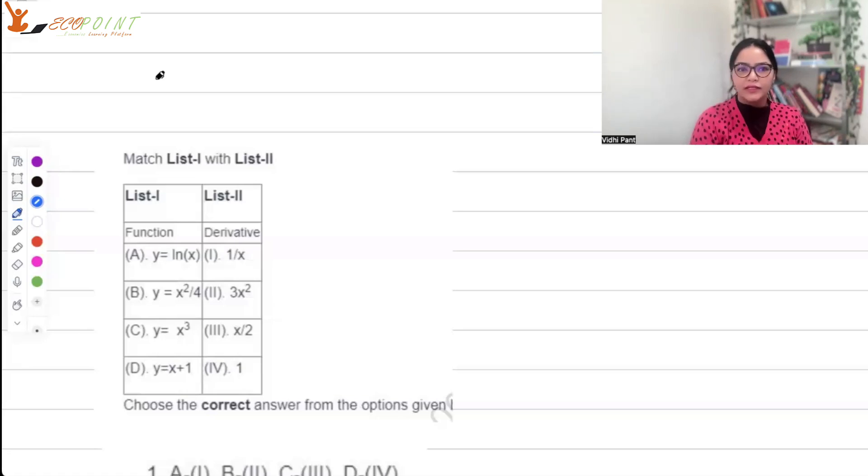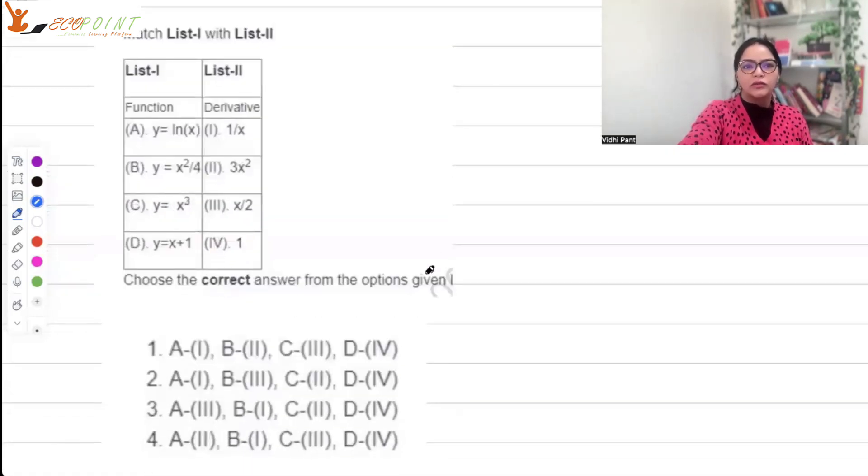We have two lists here, list one, list two, functions and derivatives are there, we need to match. So quickly let's differentiate and figure it out. The derivative of log x is 1 by x.